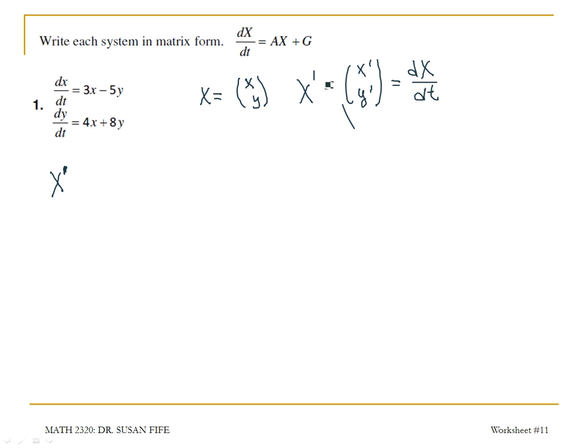You could write it as dx/dt or x prime. Either one means the same thing. So notice on the left side of the equation, I have my derivative terms, x prime. And then this A is called the coefficient matrix. It contains the coefficients of x and y, and it should always be a square matrix.